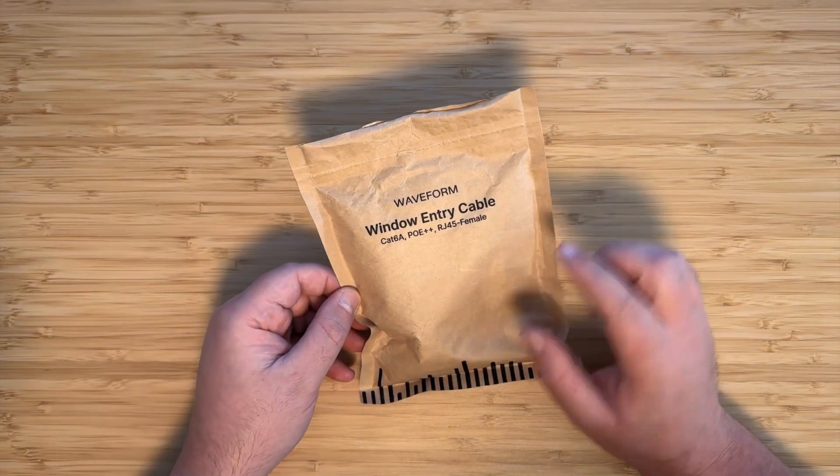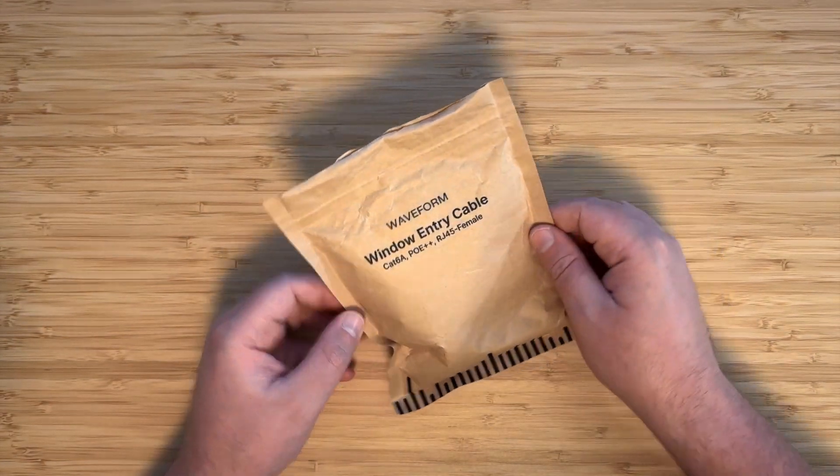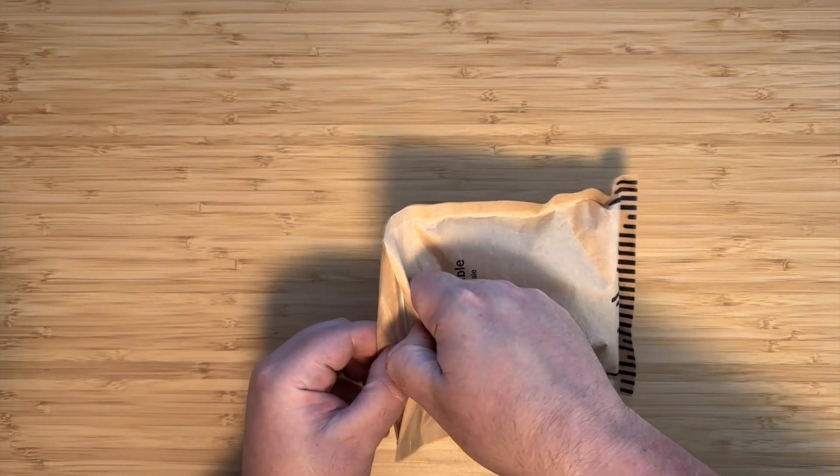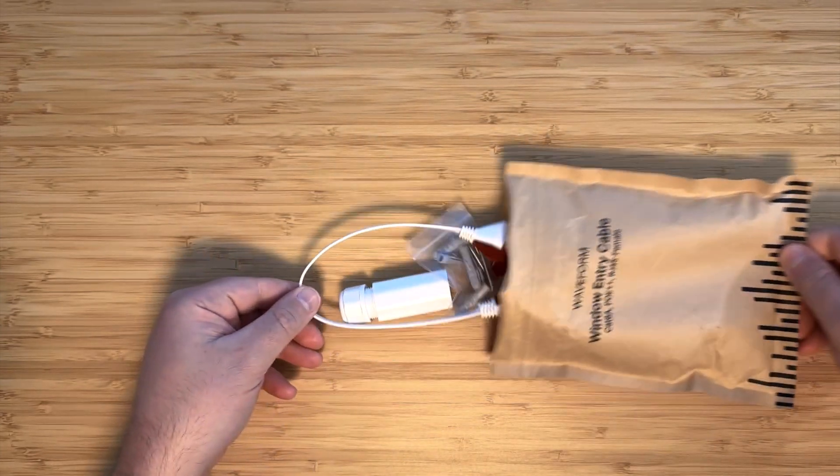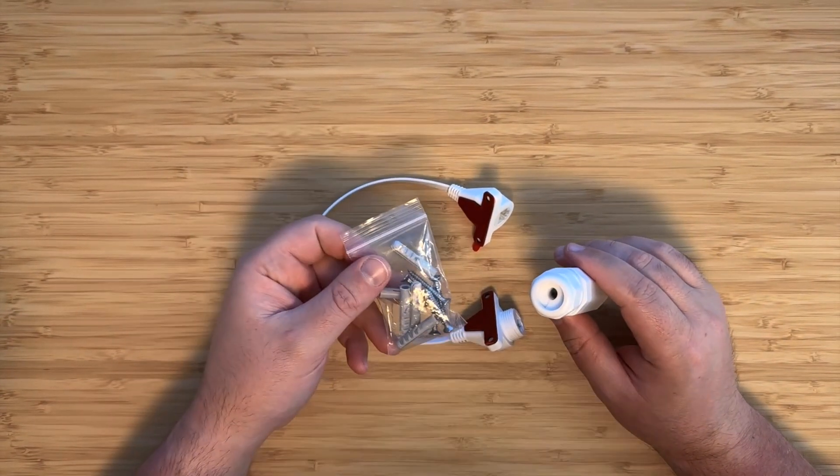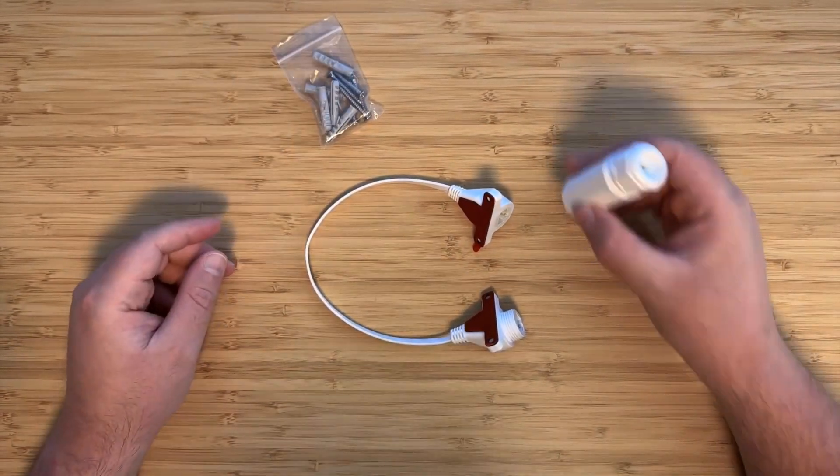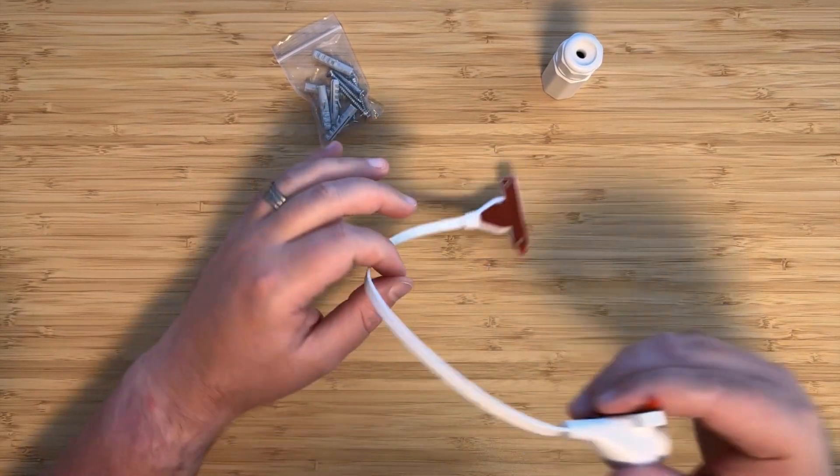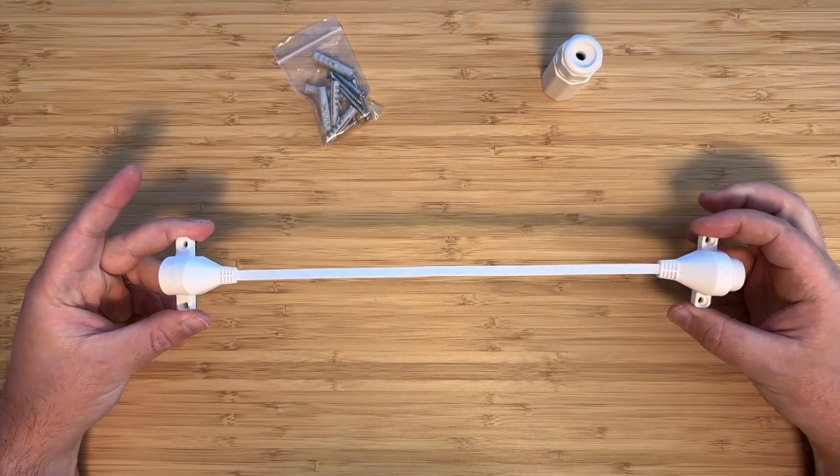Here we have our Ethernet window entry cable in its packaging. We'll go ahead and pull open the bag and pull out the cable. We also have some screws and a weatherproofing sleeve, both of which we'll get back to. We'll start by looking at the cable. This is it.